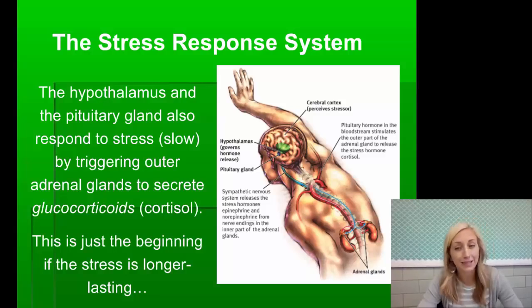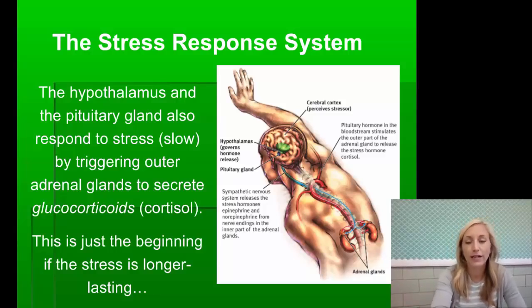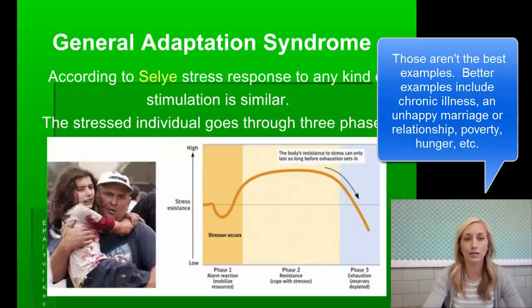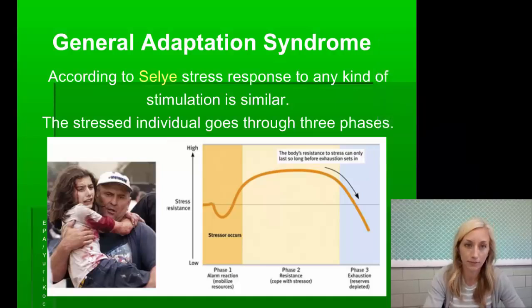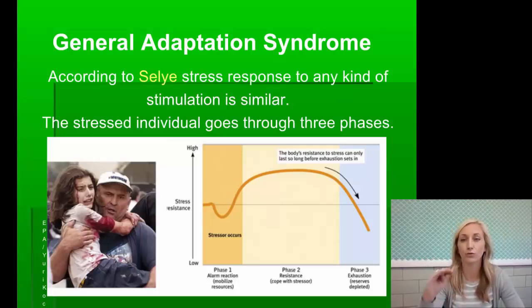If the stress is longer lasting, other systems come into play. A quick stressor like a small car accident might only last hours or a week. However, for longer-lasting stress — like work, having a new baby, or preparing for a wedding — we turn to Hans Selye's General Adaptation Syndrome. According to Selye, the stress response to any kind of stimulation is similar — not that we don't individually respond differently, but that we all go through the same three phases.